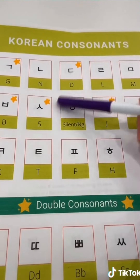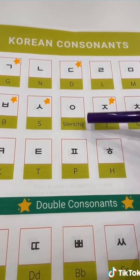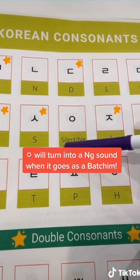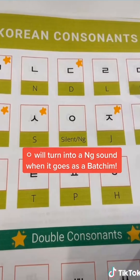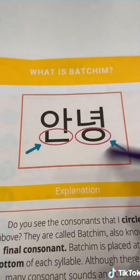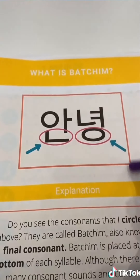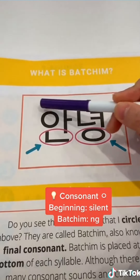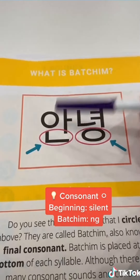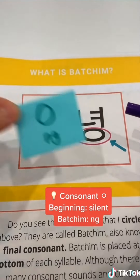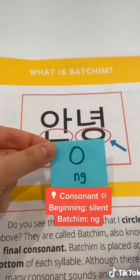Today let's take a look at the consonant 응 as a 받침. This is actually a silent consonant, but when it's placed as a 받침, it makes a 응 sound. It's really important to remember: when this consonant comes at the beginning, it makes no sound. But when it's placed as a 받침, it makes a 응 sound.